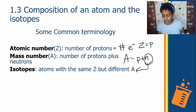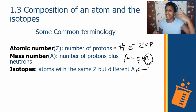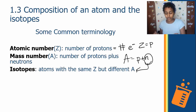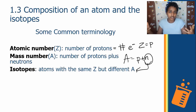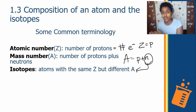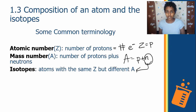For isotopes, you have the same number of protons, the same number of electrons, but a different number of neutrons — that's the key thing about isotopes. It's still the same element; you still call it hydrogen or oxygen or whatever it may be, but the different neutron number is what makes them isotopes.